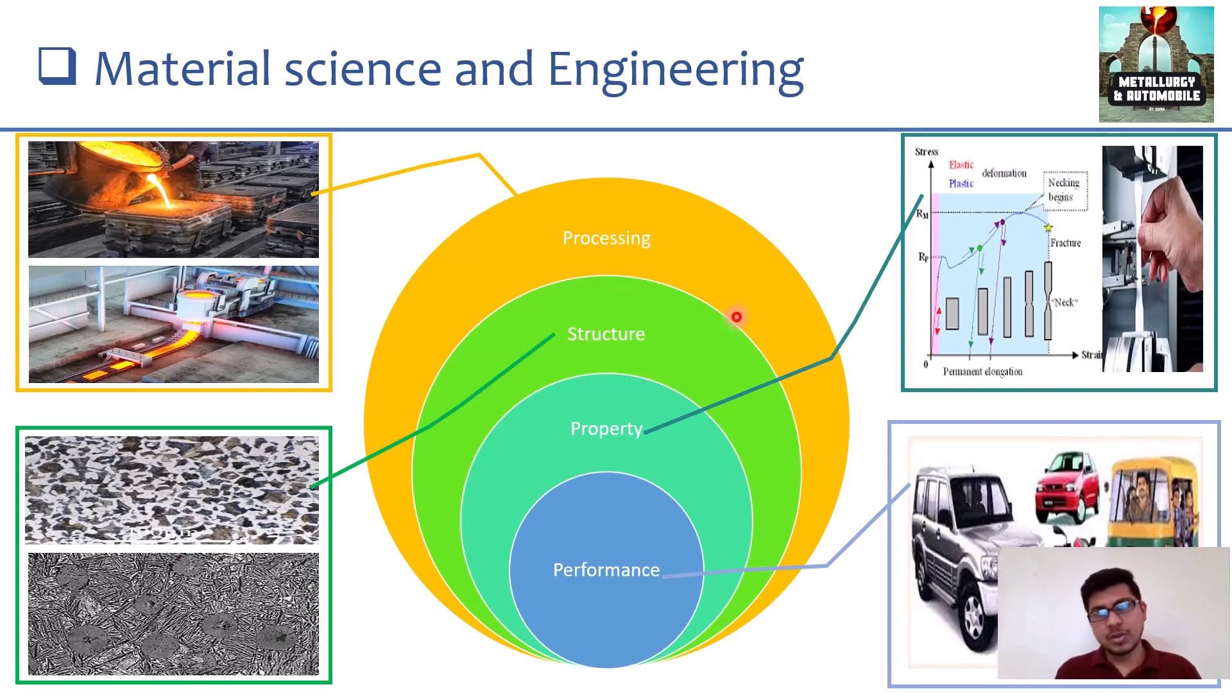For example, let us take an example of a human only. Our properties, our performance, it depends on our bone structure. If one person's bone structure is good, then his properties and his performance is also good. Like that, for every material's properties, structure is the main point. This structure will depend on the processing. Based on the structure, properties will be determined. Based on the properties, its performance will depend.